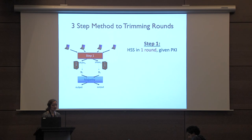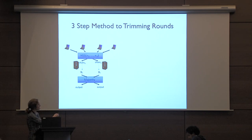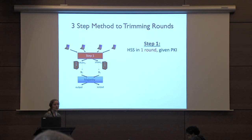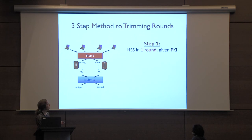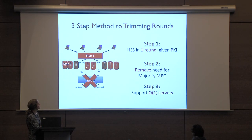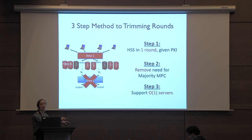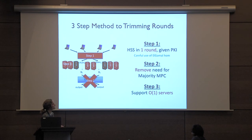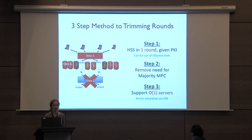We have a constant but large number of rounds. To get to two rounds there are three primary steps. First, compress the initial sharing phase into a single round using public key infrastructure. Second, remove the need for an extra MPC majority step by making it safe to exchange shares directly despite error leakage — using leakage-resilient circuit compilers. Third, extend from two servers to more servers via standard server emulation tricks, to support the full multi-party setting.